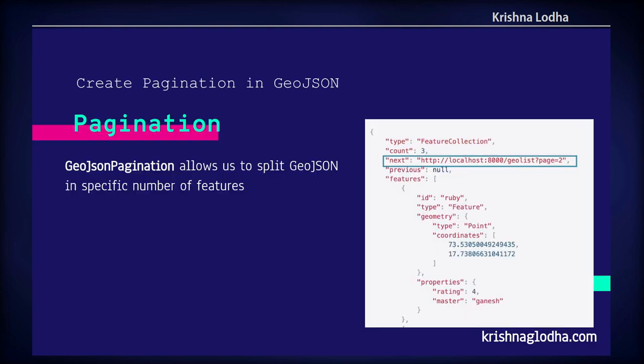Next we'll see how pagination works. This is one problem with GeoJSON: as the number of features increases, it makes the GeoJSON very heavy. So pagination is a very good approach where we can set a limit on the number of features returned per request. By default Django REST Framework supports 100 features per request, but you can change that in settings.py. We also get two new properties — next and previous — which makes life very easy since you can just hit that URL to get the next or previous data.